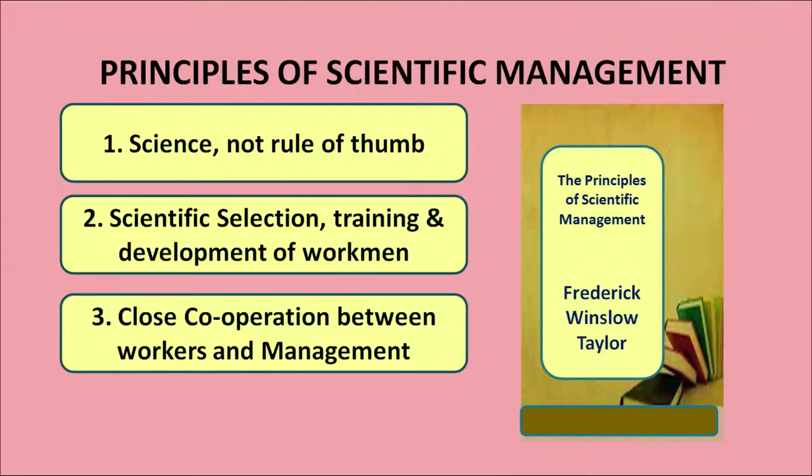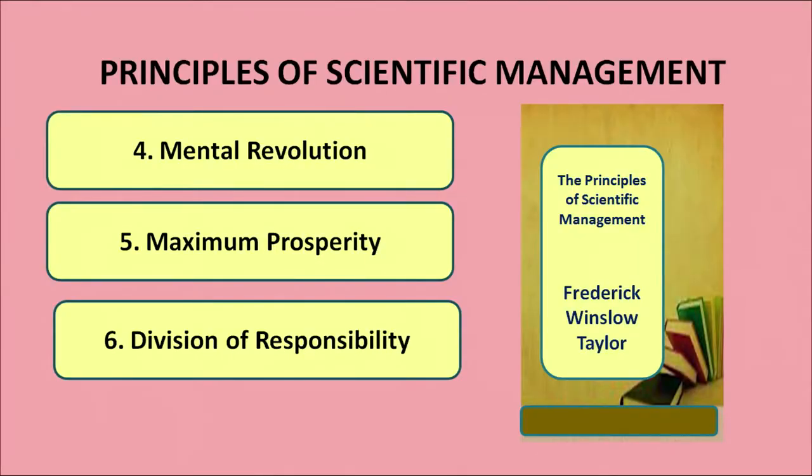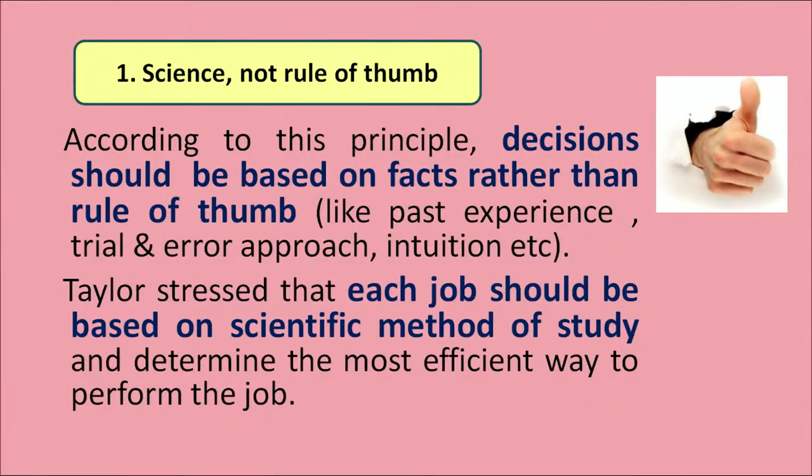For the purpose of accomplishing what scientific management suggested, there are certain principles given by F.W. Taylor: science not a rule of thumb, scientific selection, training and development of workmen, close cooperation between the workers and management, mental revolution, maximum prosperity, and division of responsibility.